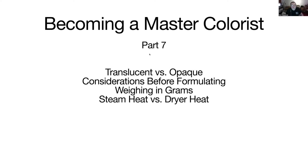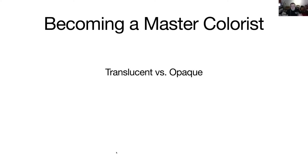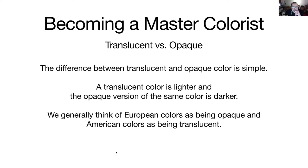Let's start with translucent versus opaque. It's a pretty simple topic. Very simply, the difference between translucent and opaque is that a translucent color is lighter, and an opaque color of the same color is darker.